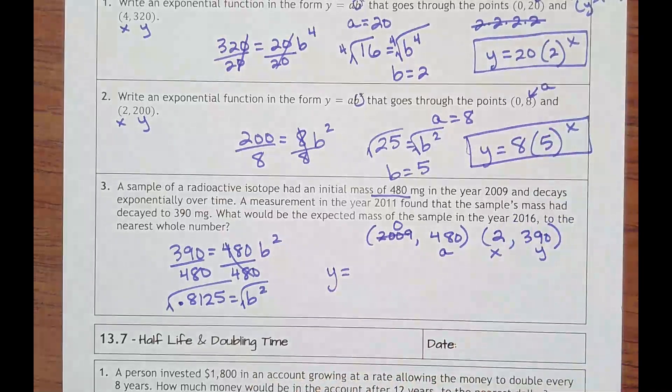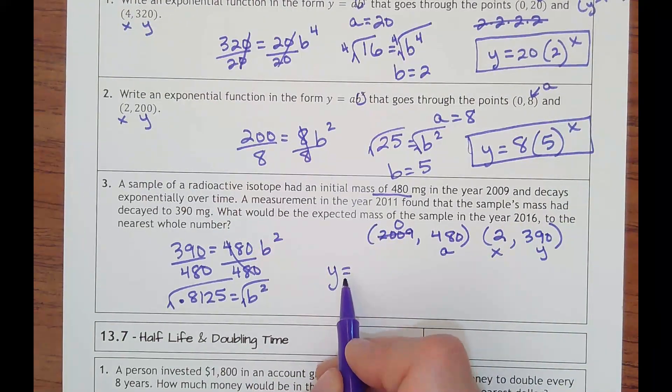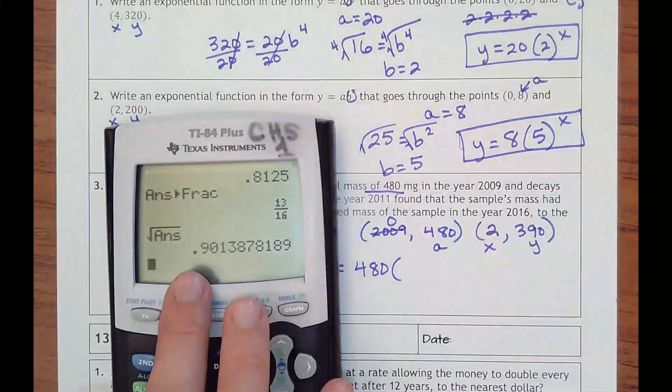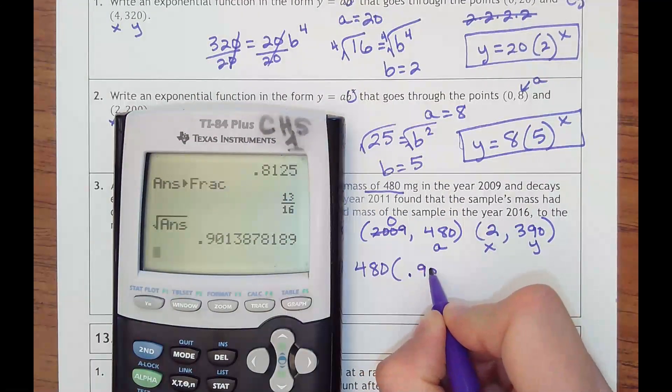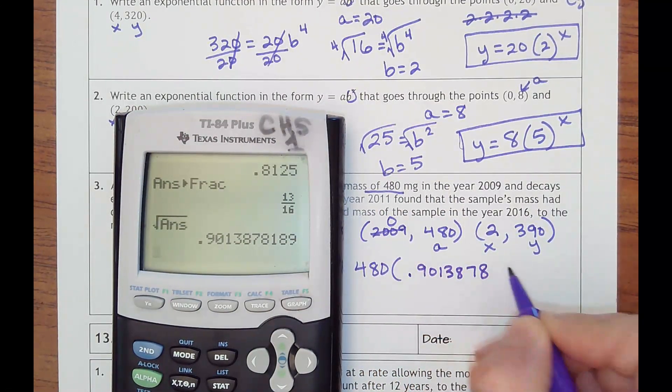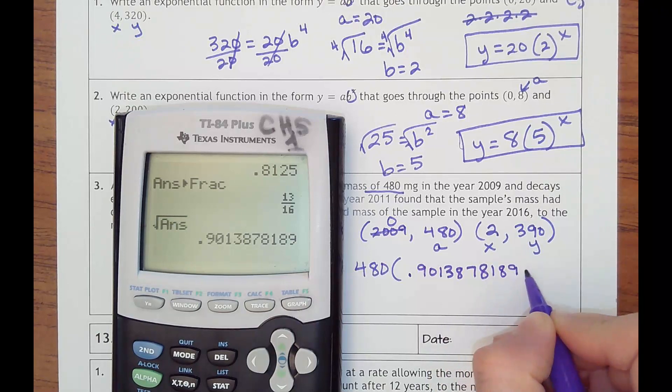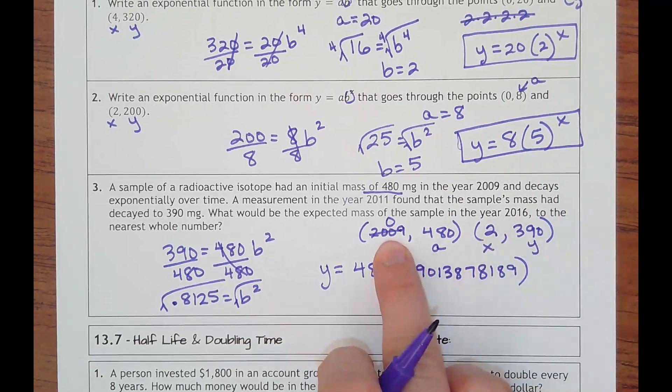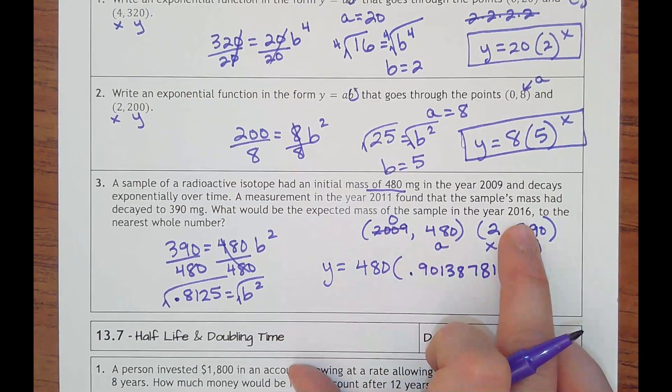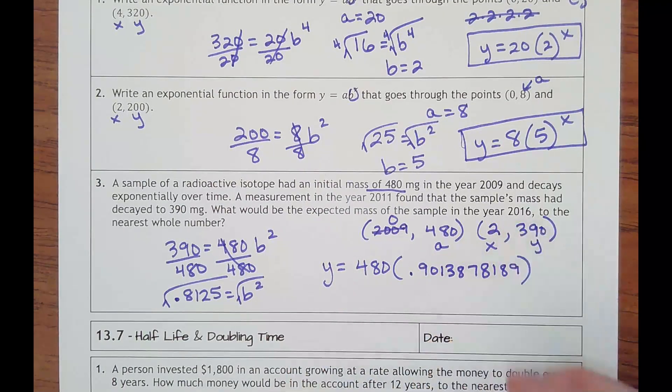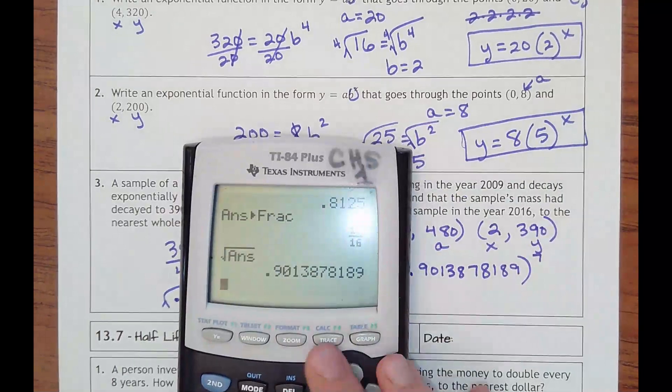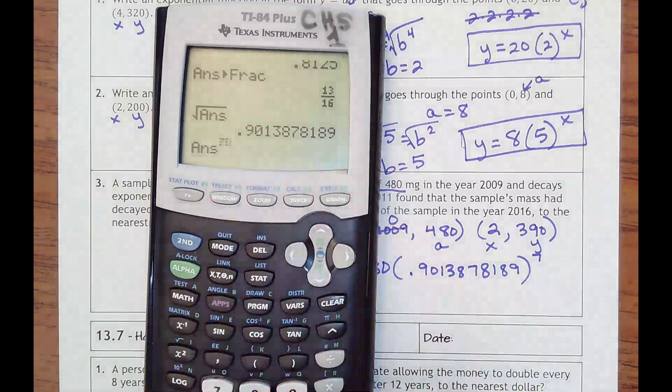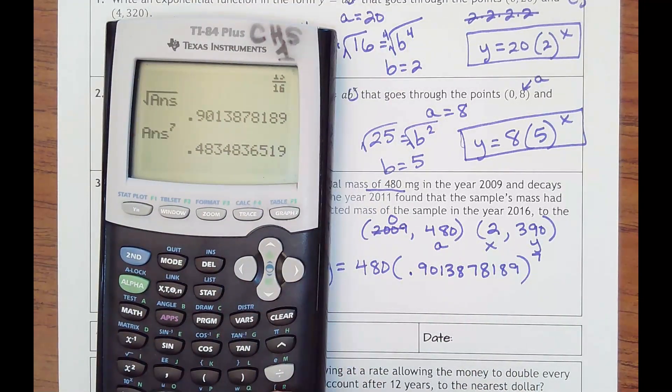It's y, which represents how much mass or milligrams the sample would have, started with 480 times - this is my b or my common ratio here - 0.9013878. I would do, you could even write the whole thing. I'll probably just steal that answer here again. And then it wants it for year 2016. So if this is year zero, how many years later is 2016 from 2009? That would be seven years later. So I would put it to the seventh power. I'm actually going to keep this answer in here and just put my exponent button and steal this answer, take it to the seventh power, and then take it times 480.